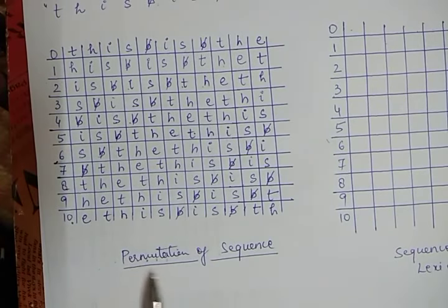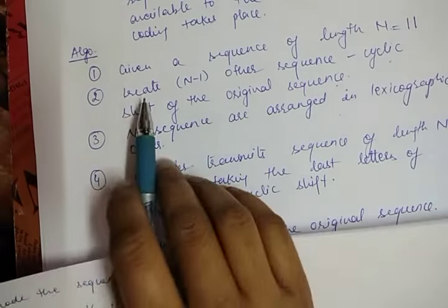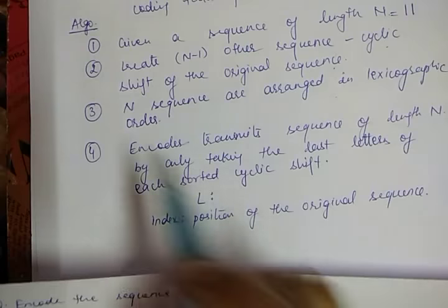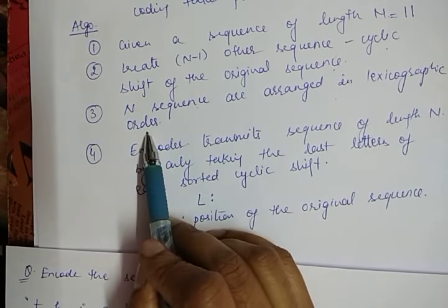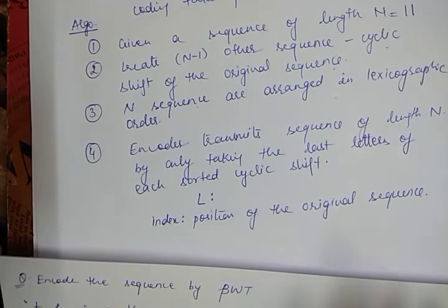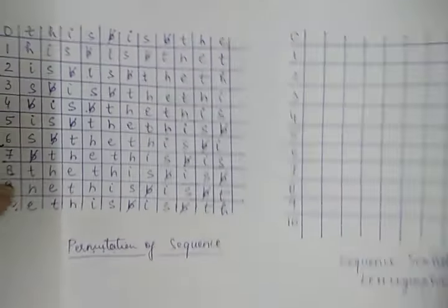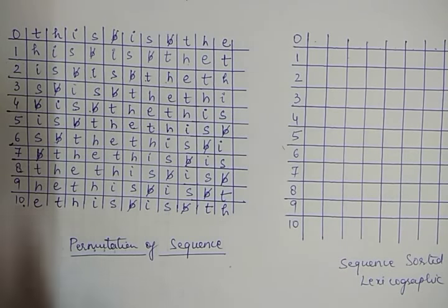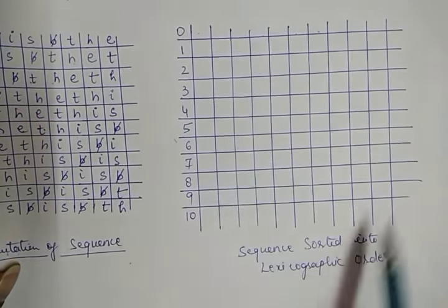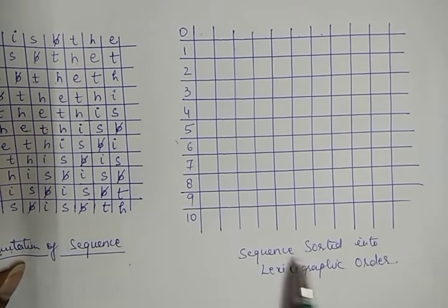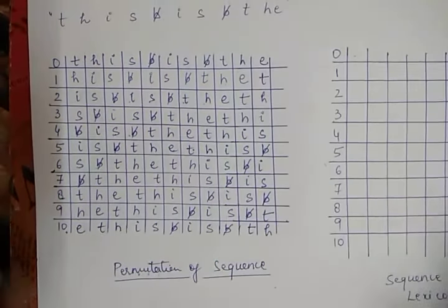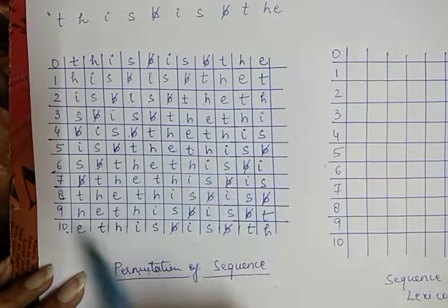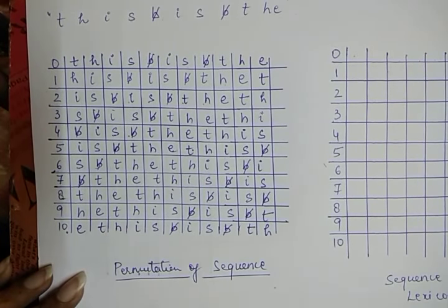The second step is completed. Now the third step says we have to arrange the N sequences in lexicographic order — which is similar to alphabetical order, where we take special symbols first, then A, B, C, D up to Z. We create a second table which is the sequence sorted in lexicographic order. Now we take the first table and sort it.